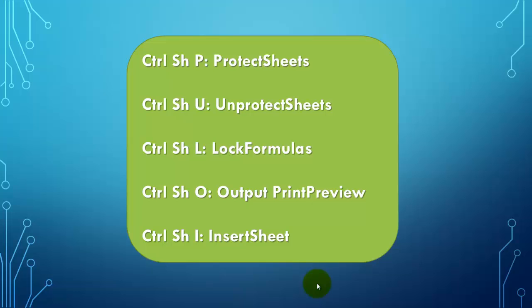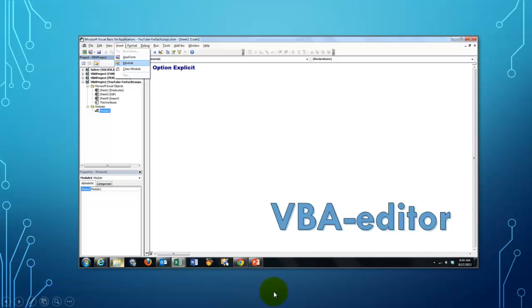We are going to create five macros or subroutines in VBA. The first one protects all the sheets by looping through all the worksheets. The second one unprotects all the sheets. Then we are going to do one that protects the sheets but only the formulas in the sheets, so that you cannot inadvertently change a formula. Then we will loop through all the sheets and make a print preview of each one. And finally we will insert a sheet and add it to the collection of sheets.